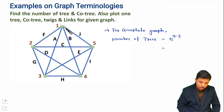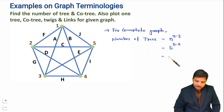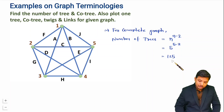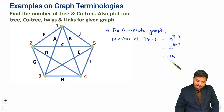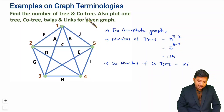You can observe there are 5 nodes in the graph. So the total number of trees will be 5 to the power of 5 minus 2, which is 5 to the power 3, which equals 125. So for the given graph the possible number of trees is 125. The number of trees equals the number of cotrees, so there are also 125 cotrees.